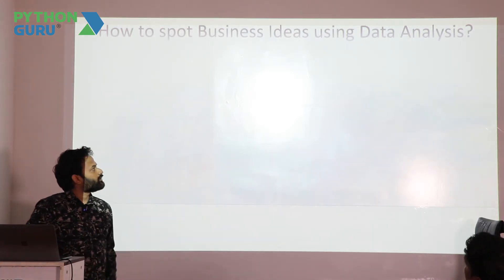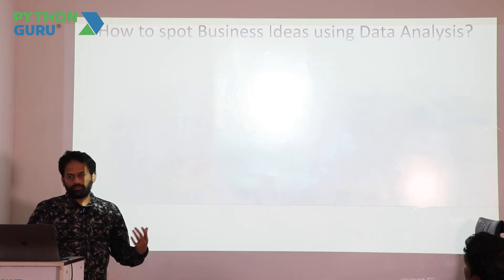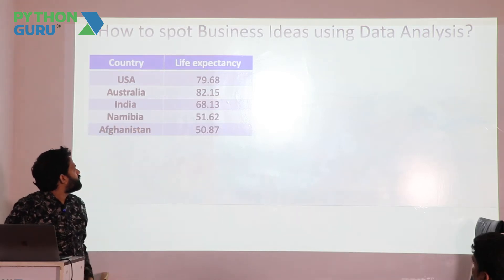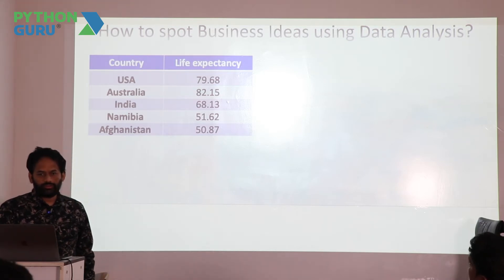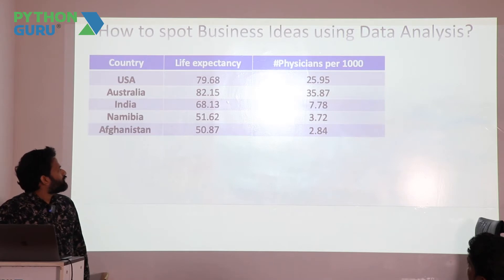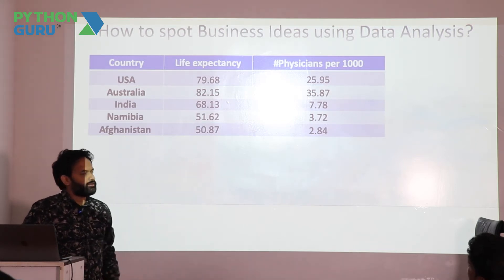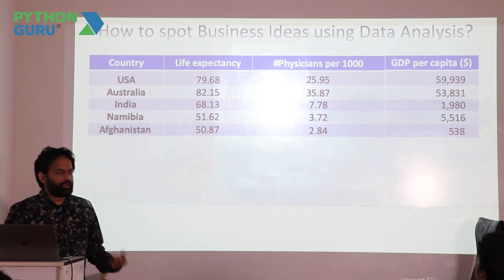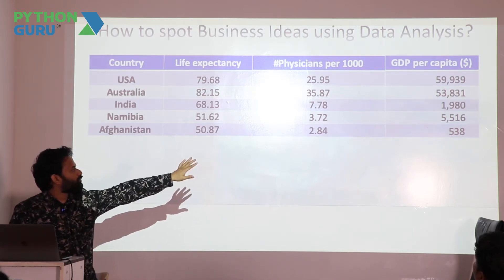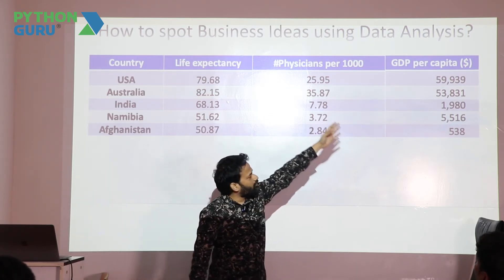How to spot a business idea: given some data, how do we do basic analysis and identify what problem we can solve? For example, if you look at life expectancy across several countries — in developed countries, doctors per patient is higher compared to developing and underdeveloped countries, and GDP per capita also varies hugely. These are the two major factors that are very directly correlated with life expectancy — both show a similar high-to-low pattern.